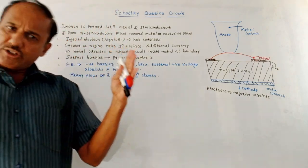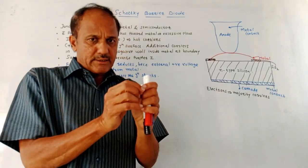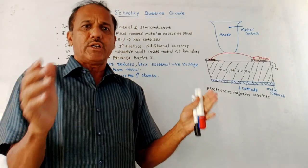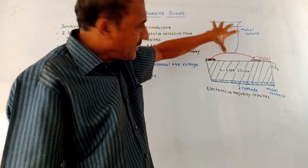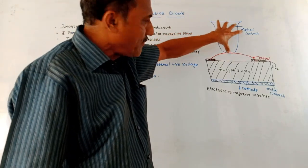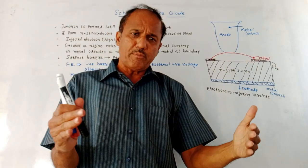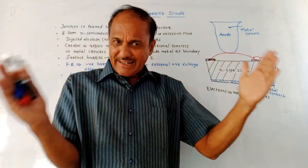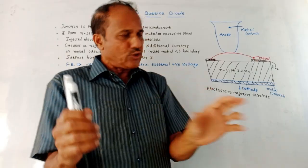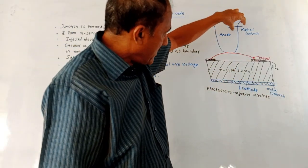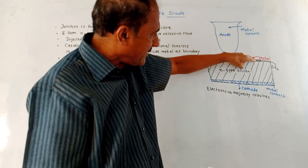As far as this Schottky Barrier Diode is concerned, it is somewhat different compared to the normal PN Junction Diode. This diagram shows the structure of Schottky Barrier Diode. In the case of a normal diode, there are two regions — P and N — with one anode and one cathode. Similarly here, this part indicates the anode terminal.